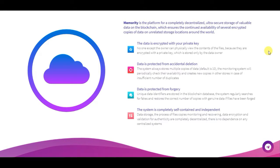Data is protected from accidental deletion. The system always stores multiple copies of data — the default is 10. The monitoring system will periodically check their availability and create new copies in other storage locations in case of an insufficient number of duplicates. Data is also protected from forgery, with unique data identifiers stored in the blockchain database.